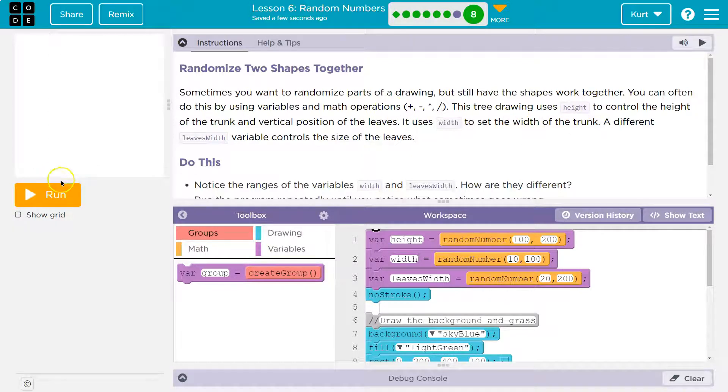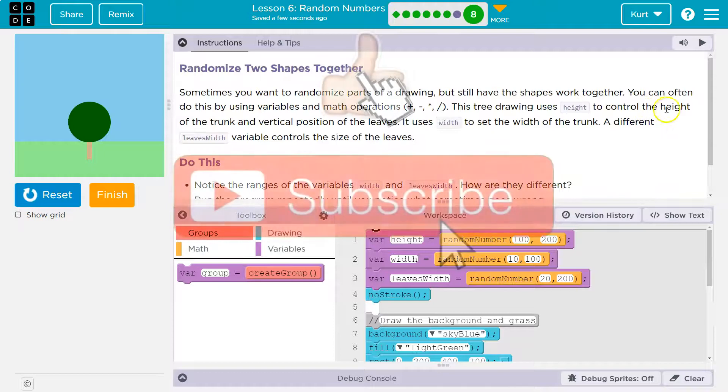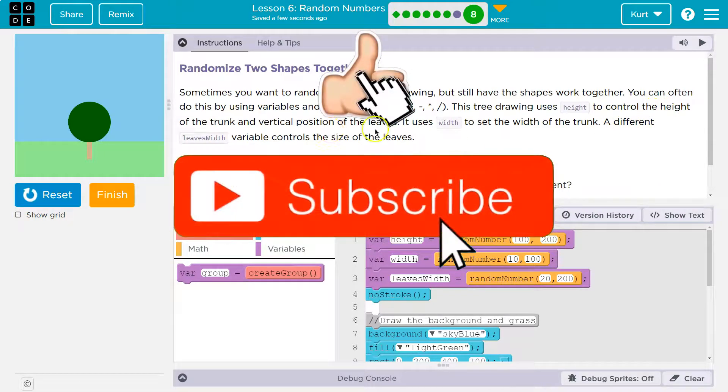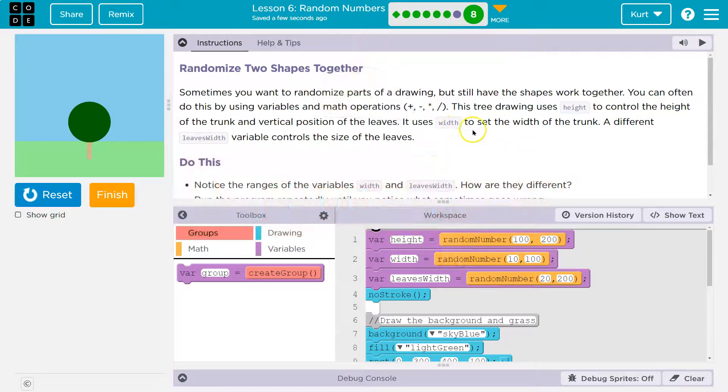This tree drawing uses height to control the height of the tree trunk and vertical positions of the leaves. It uses width to set the width of the trunk. A different leaves width variable controls the size of the leaves.